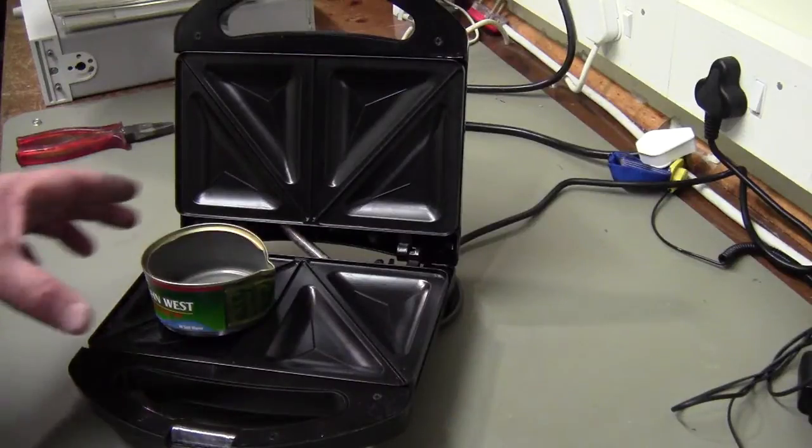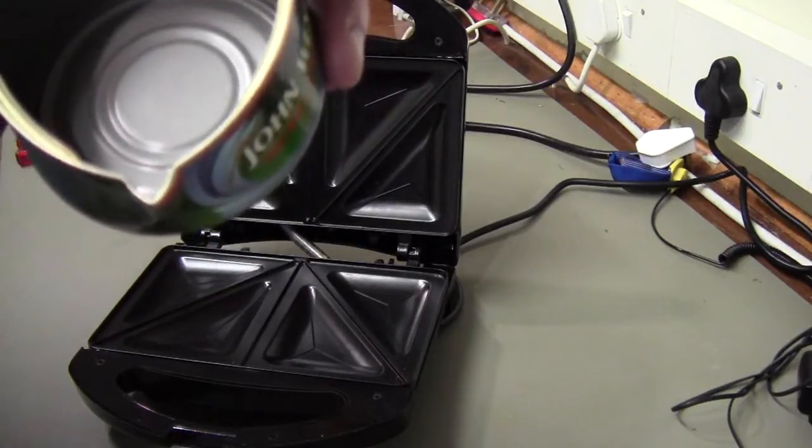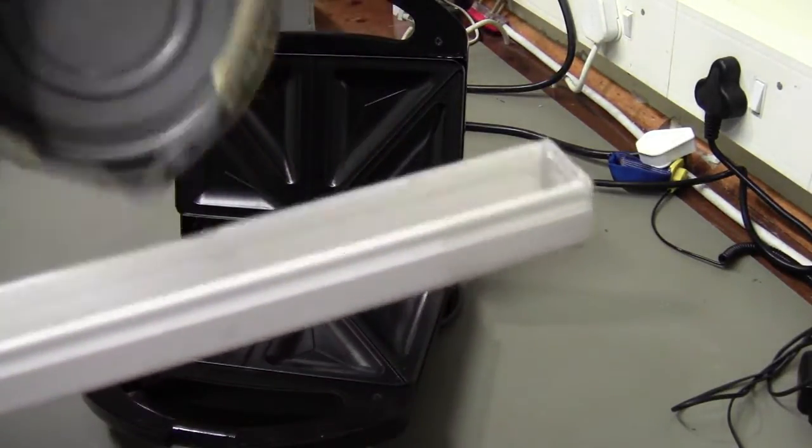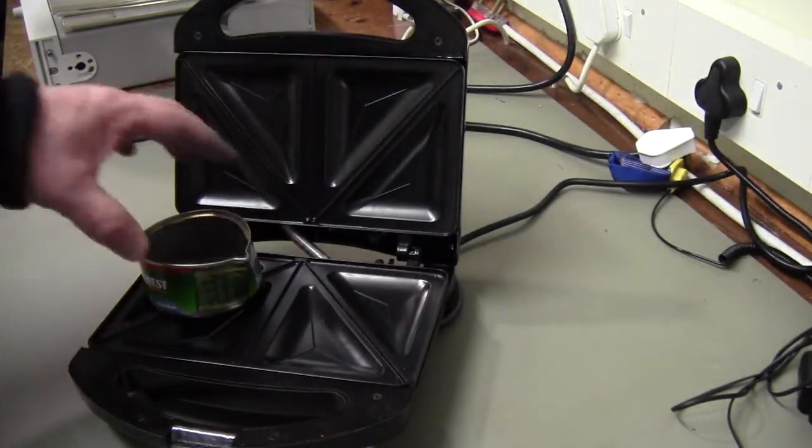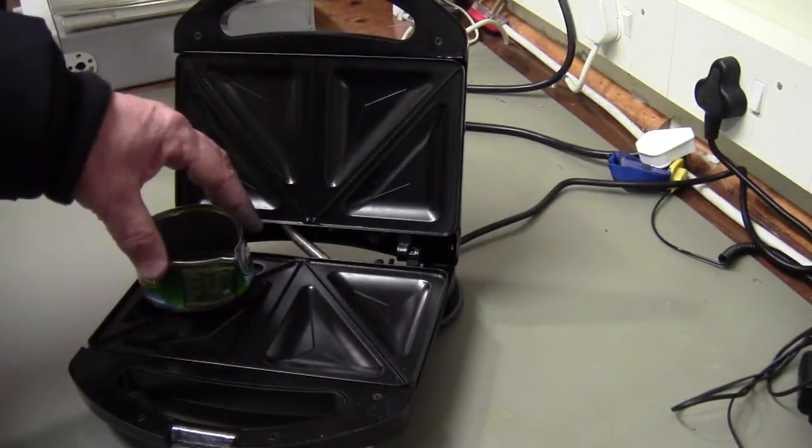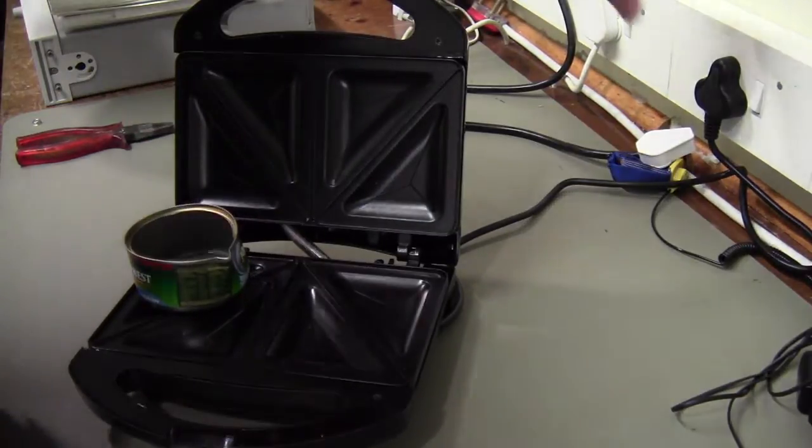I prepared a tuna tin, just bent it so I've got a nice thing to be able to pour the wax into there afterwards. I'm using a sandwich maker, this is the only hot plate I could find, so let's hope that it will work.